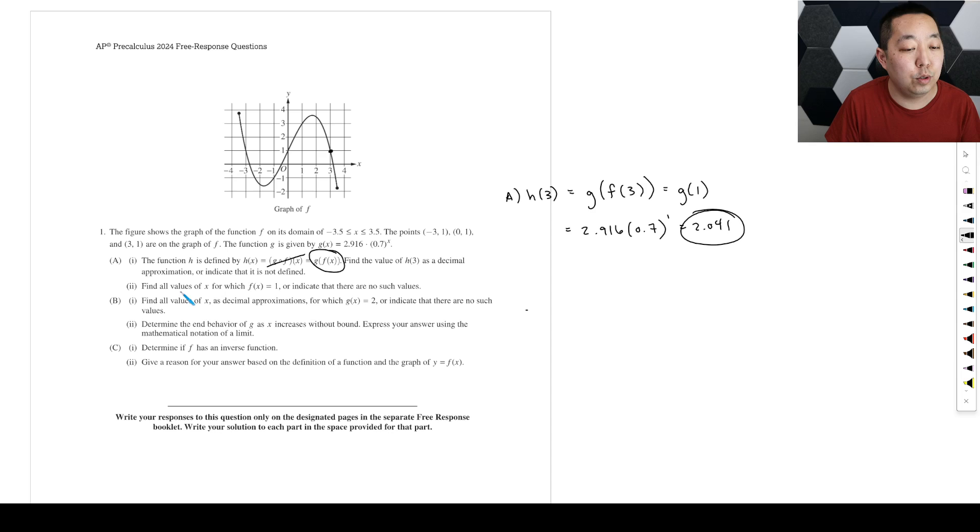Part 2 is find all values of X where F of X is equal to 1, or indicate there are no such values. So when is F of X equal to 1? That's where the Y value is equal to 1, right? So that's going to occur here and here, 3 and negative 3. So that occurs at 3 and negative 3.